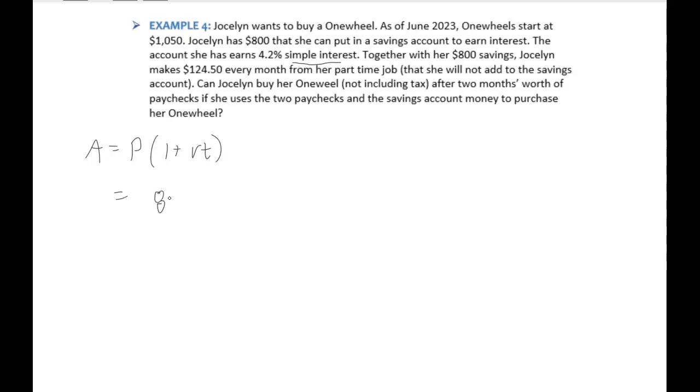So she has $800 to invest, and the savings account she found earns 4.2% interest. So I'll change that to a decimal. And now she wants to know, after two months, can I buy my one wheel? So two months is two months out of the 12 months in a year, or two twelfths of a year.